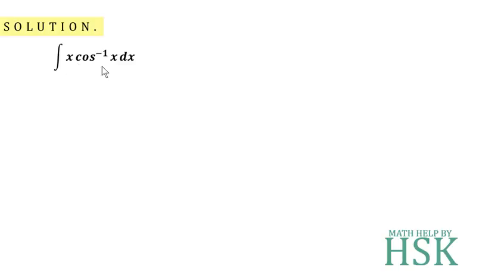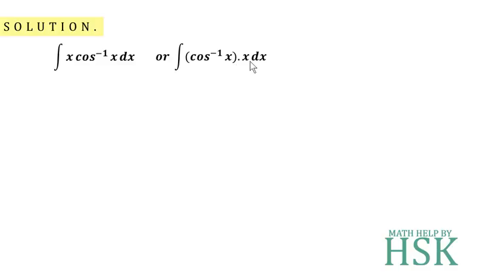We need to decide which function to take as the first function and which as the second. Since we cannot integrate cos⁻¹(x) directly — there is no direct formula for it — we have no option but to take cos⁻¹(x) as the first function, because the first function is differentiated. So this is written as cos⁻¹(x) · x dx.